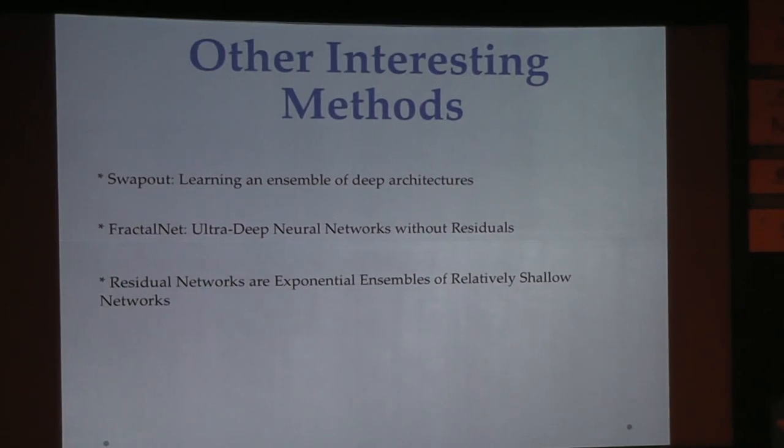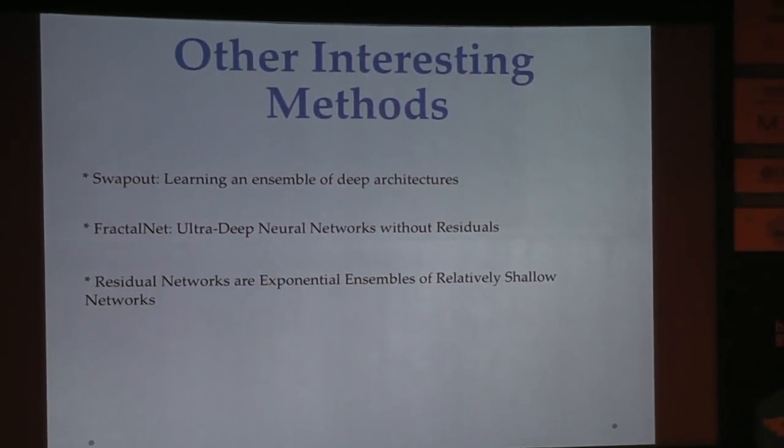There's also a graph on vanishing gradients if you care about that. Other recent methods to mention: the swap-out method, also a regularization method that combines residual, feed-forward, and dropout. Fractal nets — hyped as ultra-deep neural nets — claim that by stacking fractal structures together you don't need residuals and still get good output. A third method says that instead of just adding the residual from the previous layer, you can add an ensemble of residuals from multiple previous layers to the current layer.